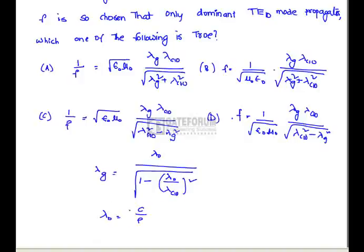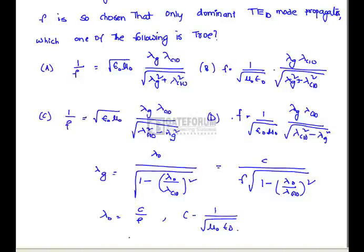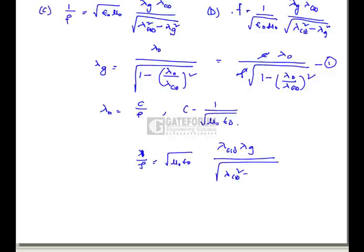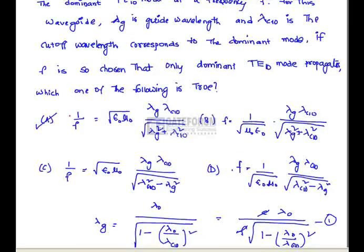If we solve this expression, with c by f and c equal to 1 over √(μ₀ε₀), and solve equation 1, we get: 1/f equals √(μ₀ε₀) · λc10 · λg divided by √(λc10² + λg²). This means option A is correct.